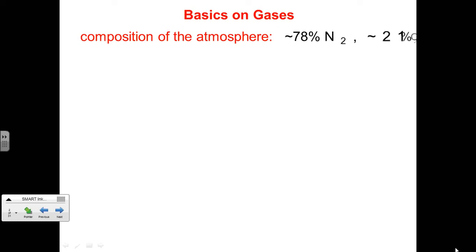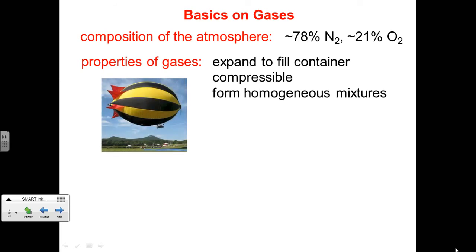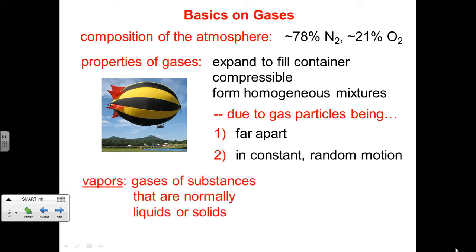The basics on gases: the atmosphere is comprised of gases, with about 78% being nitrogen and 21% being oxygen. Gases have the ability to expand to fill the container they're placed into. They're also compressible, and they can be used to form homogeneous mixtures, which means they're nearly uniform in appearance. This is due to gas particles being very far apart and always in constant random motion. We'll discuss this more when we talk about the kinetic theory of gases.